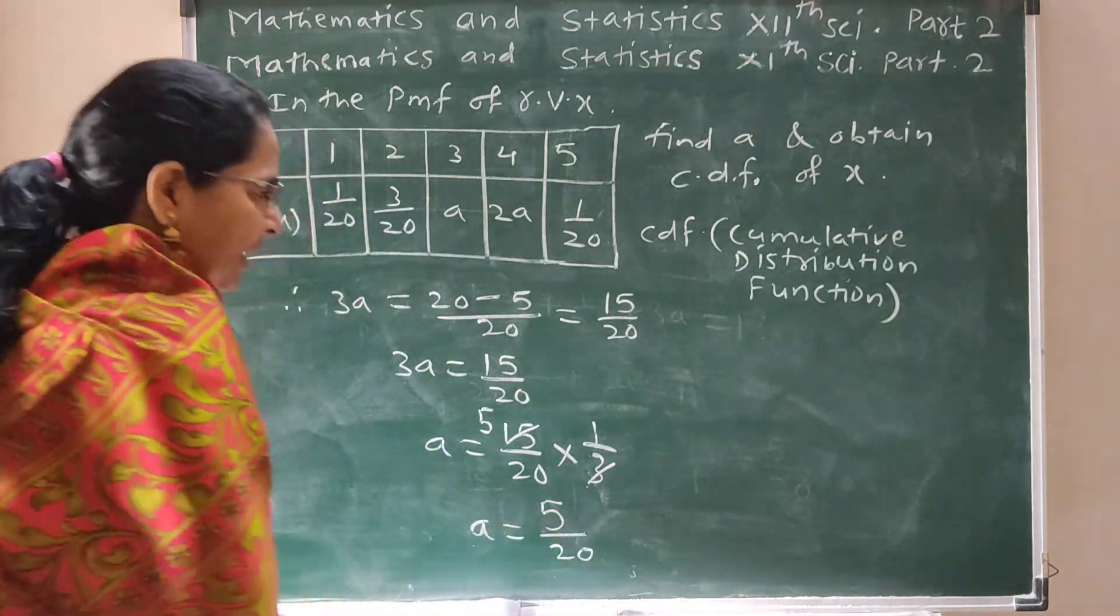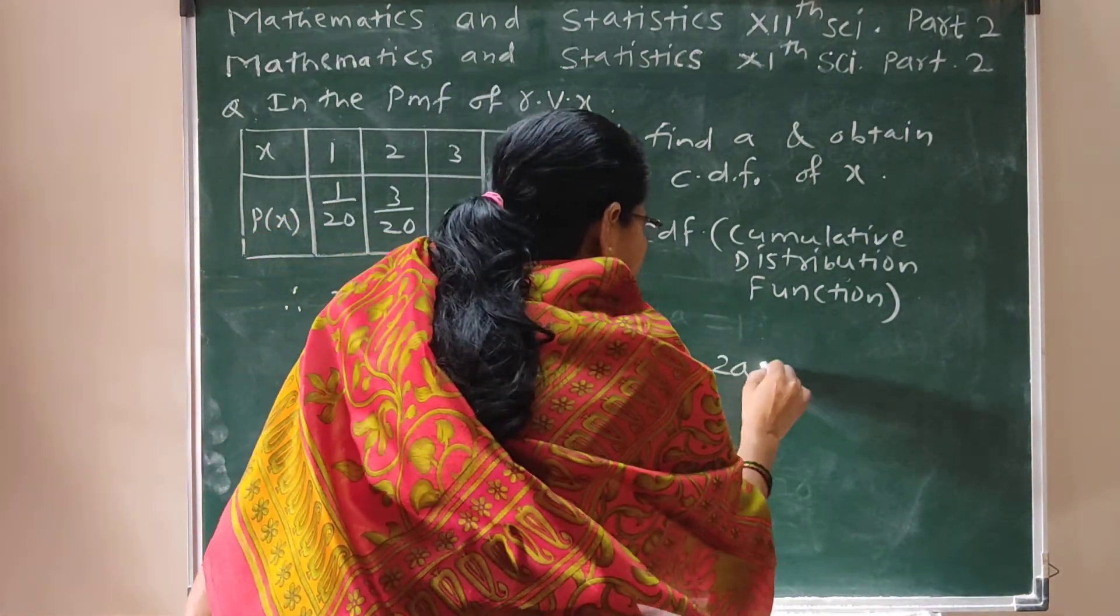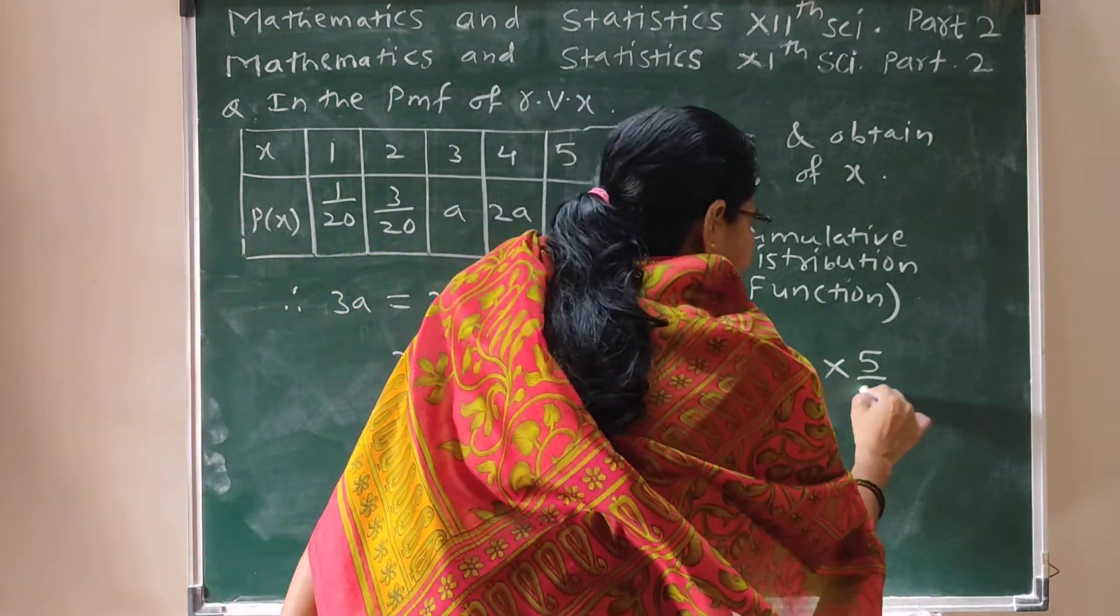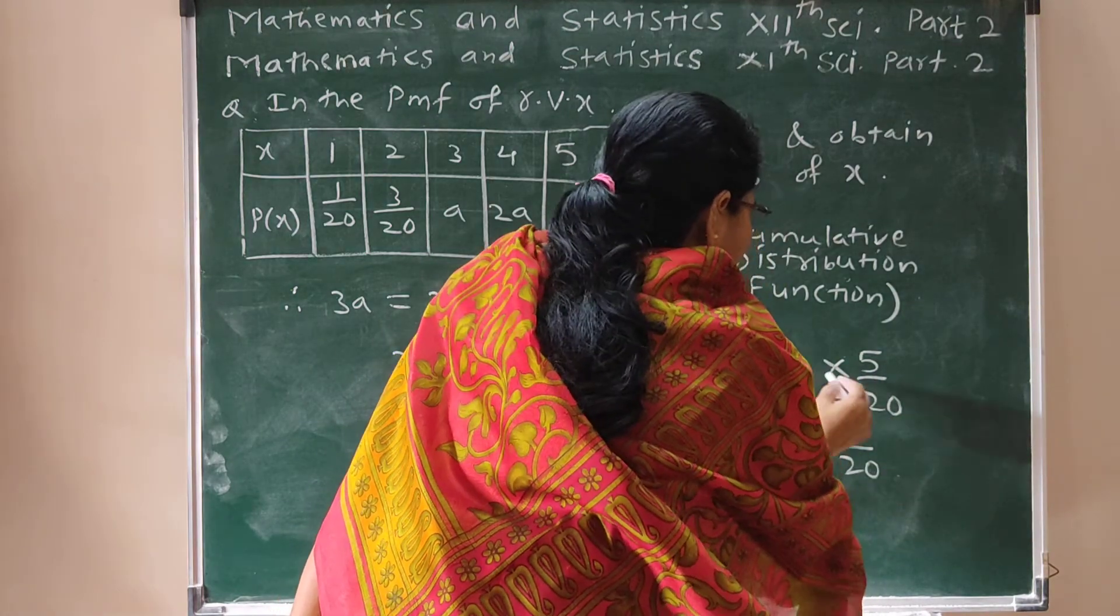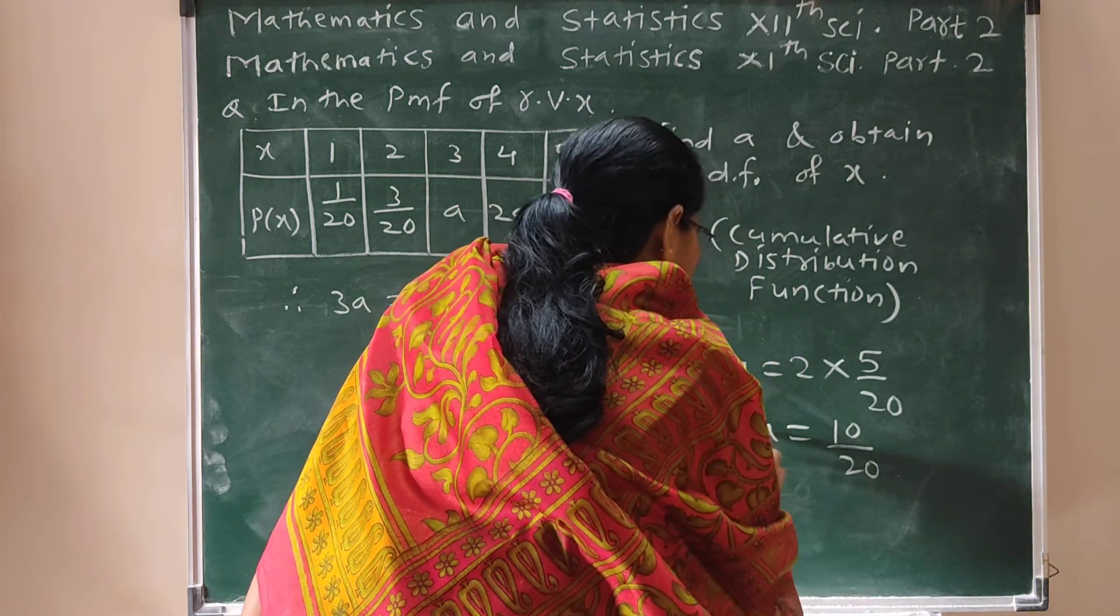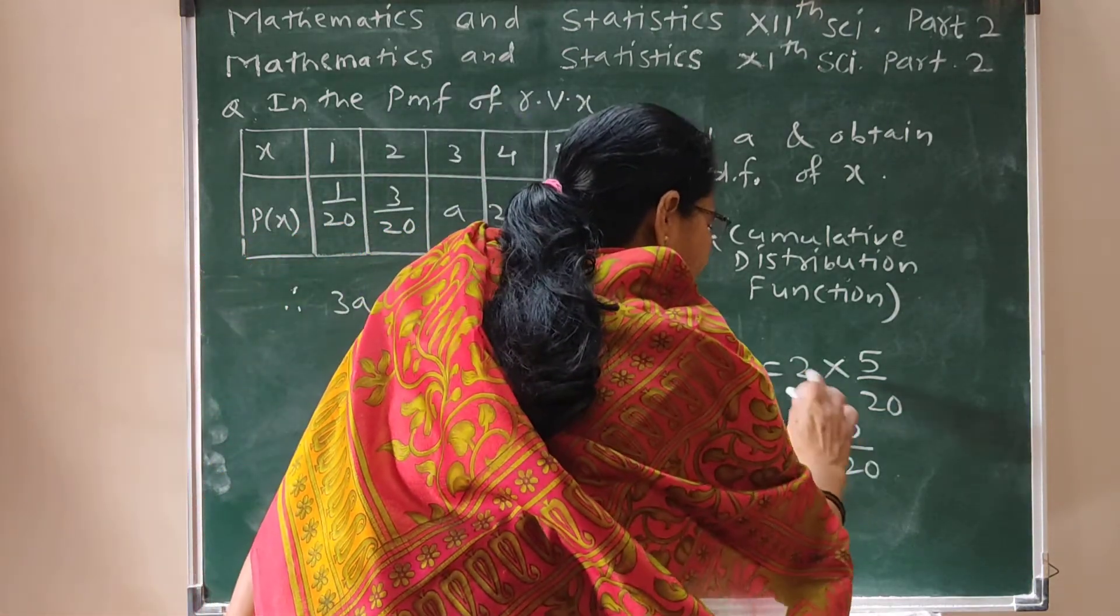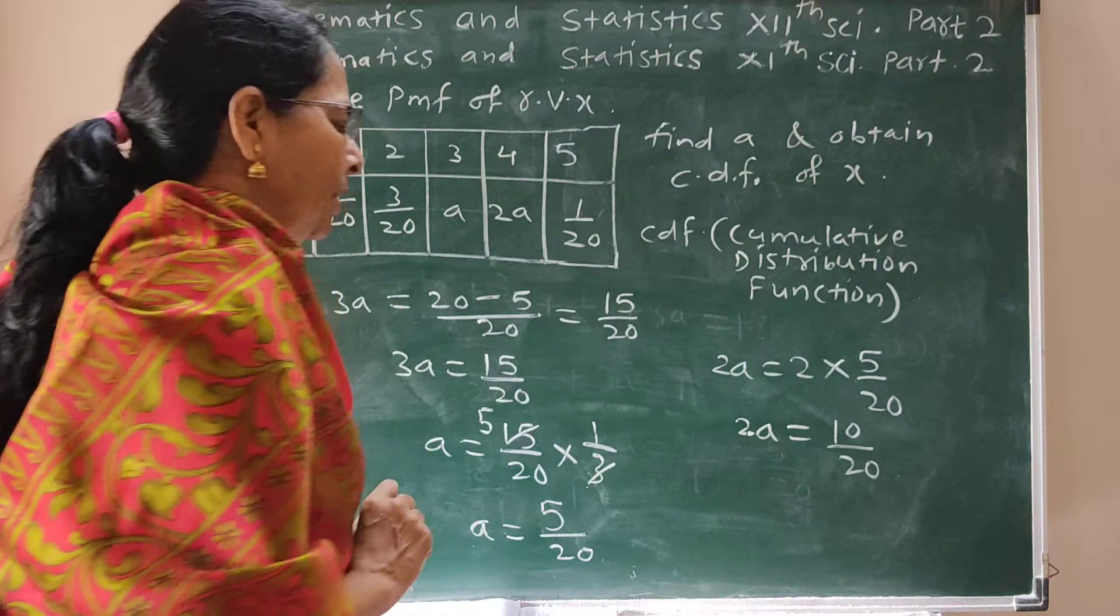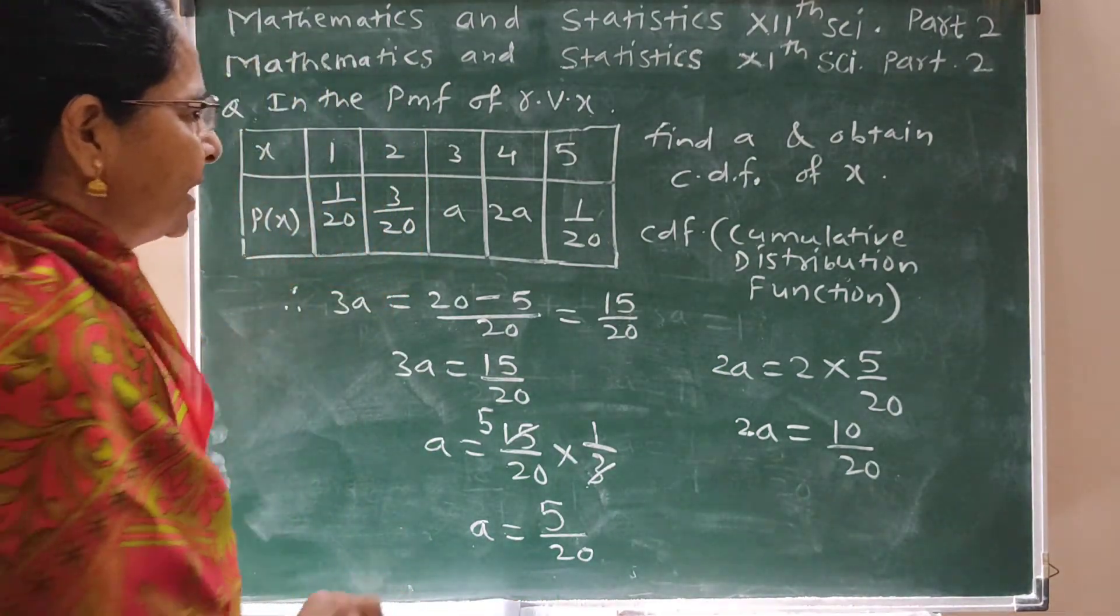Next we have to find 2A. 2A is equal to 2 into A, which is 5 upon 20. Simplification gives 10 upon 20. So 2A is 10 upon 20.